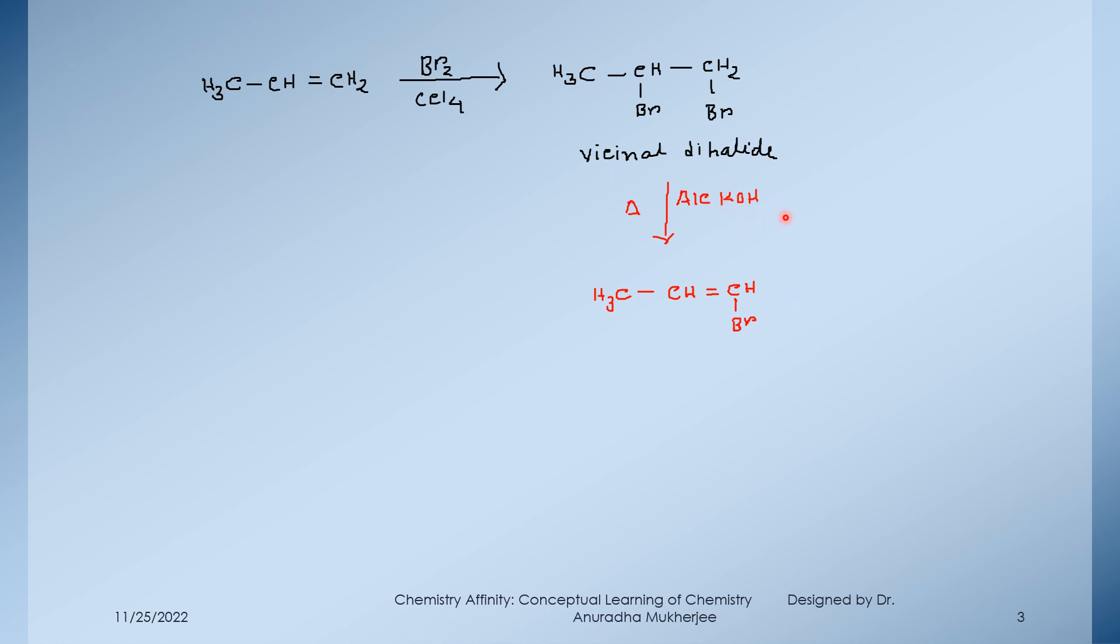Now we have to treat vicinal dibromide with alcoholic KOH. Elimination reaction takes place. In the first step, bromine from this carbon and hydrogen from this carbon will be leaving as HBr and a double bond will form. Still, one more bromine is present. So that's why one more step will happen where this bromine and this hydrogen will leave as HBr and finally we will be getting an alkyne compound. It's a propyne compound we are getting here.